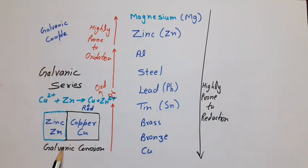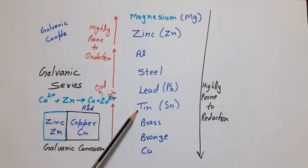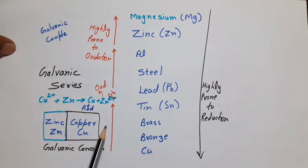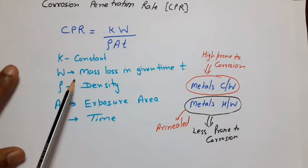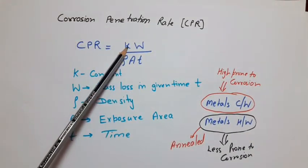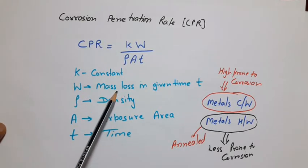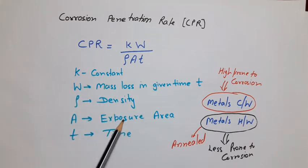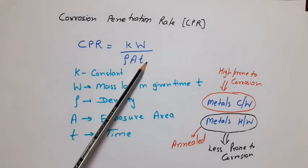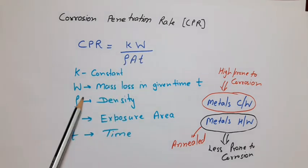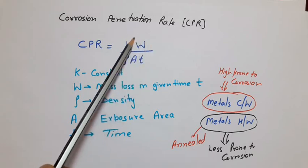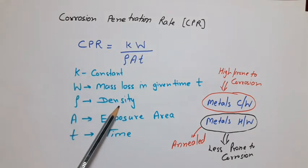Here we have to take care of one thing: if we want to reduce corrosion, then the metals combination should be selected such that they are nearby in the galvanic series. Now after learning about corrosion, we define one term known as corrosion penetration rate, represented by CPR. CPR is equal to KW divided by ρAt. Here K is a constant and W is the loss of metal in a given time t. ρ is the density of metal, A is the area of metal which is exposed to corrosion, and t is the given time. For a given metal, ρ and A are also constant. Therefore, corrosion penetration rate will solely depend upon W/t.